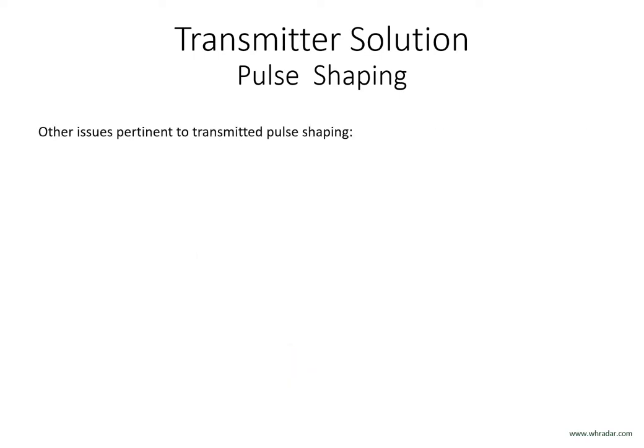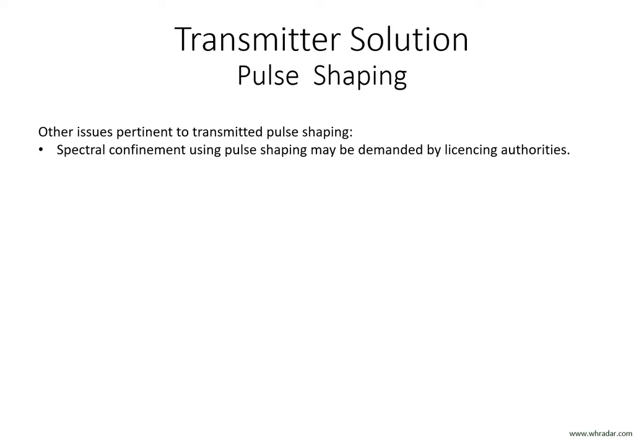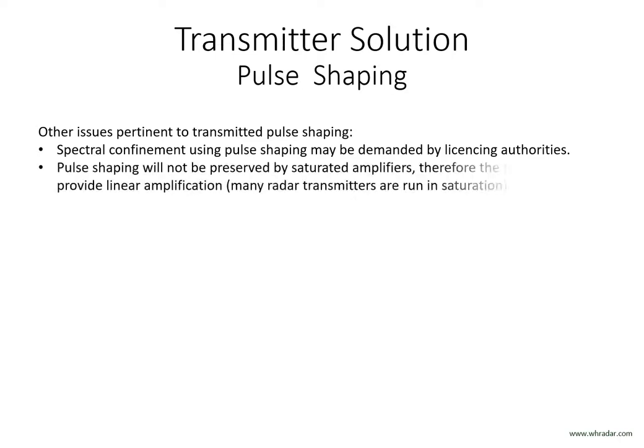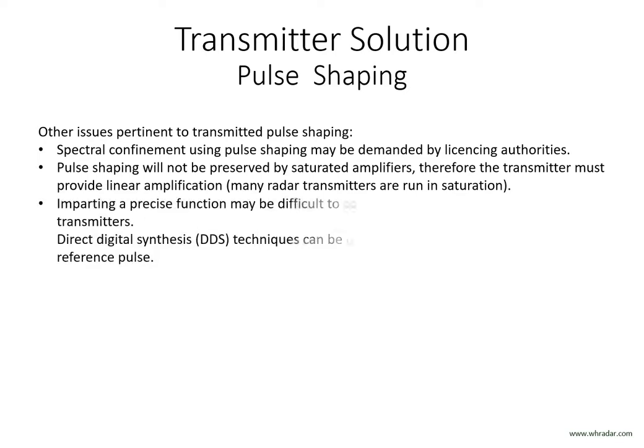It is worth pointing out a few other practical considerations with regards to pulse shaping. Firstly, spectral containment using pulse shaping may be required by RF licensing authorities so as to minimise interference for other users. This is particularly true of the HF band — i.e. 3–30 MHz — where there are many radar and communications applications vying for bandwidth. Secondly, once pulses have been shaped it is necessary for all subsequent amplifier stages to preserve that shape. This requires that the transmitter must operate within its linear region and not in a saturated state as is often the case for radar transmitters. Finally, imparting a precise shaping function may be difficult to achieve, particularly for some high power microwave sources.